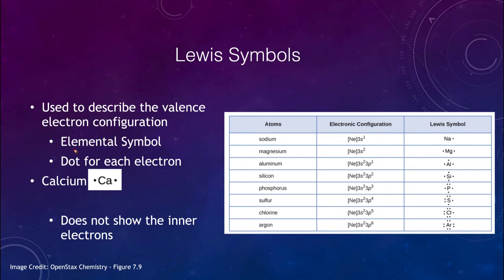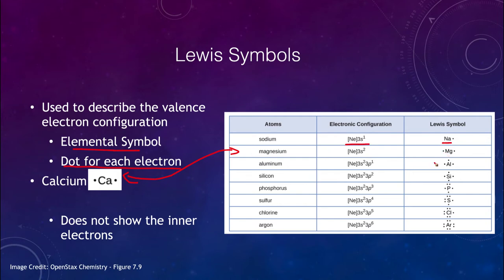A Lewis symbol has the elemental symbol first — for example, sodium, Na — and then a dot for each valence electron. Sodium has one valence electron, so just one dot is needed. Magnesium has two valence electrons, as does calcium shown here, and therefore you'll have two valence electrons, one on each side.